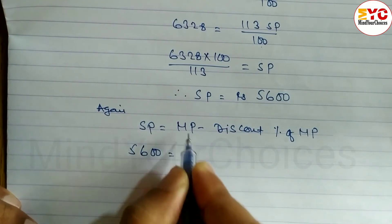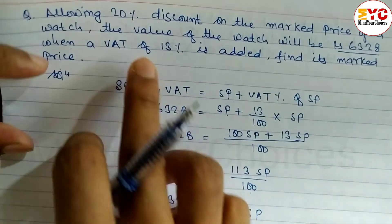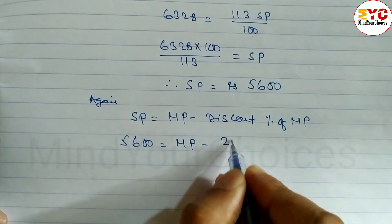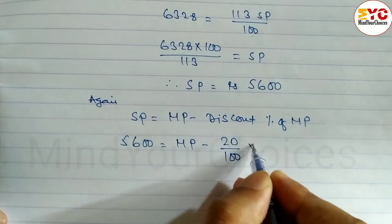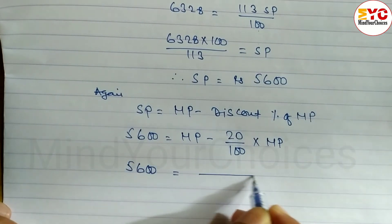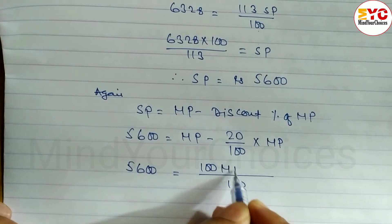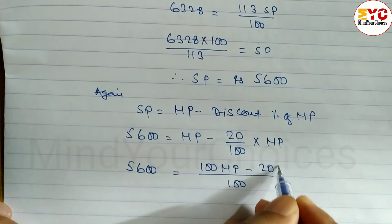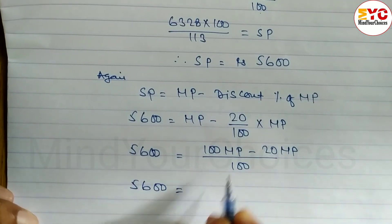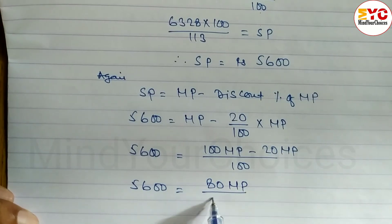So 5,600 is equal to MP minus discount percent. Discount is 20%, so we write 20 divided by 100 into MP. So 5,600 is equal to - taking LCM of 100 - 100 MP minus 20 MP. So 5,600 is equal to subtracting we get 80 MP divided by 100.